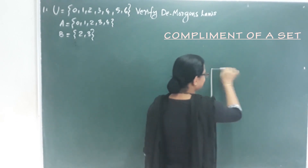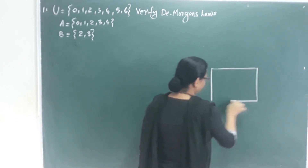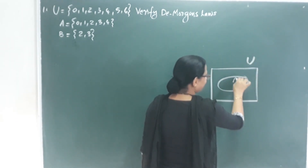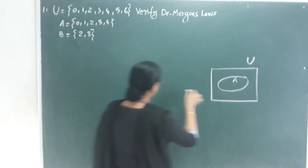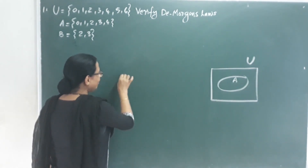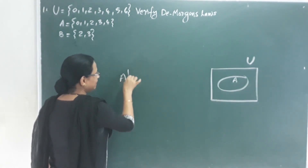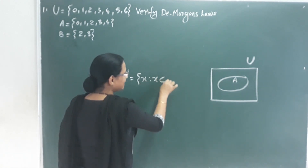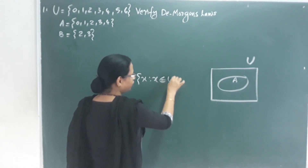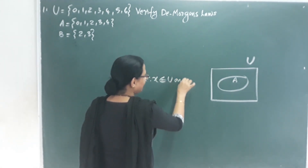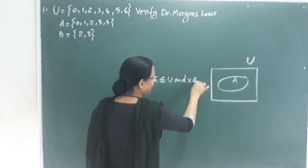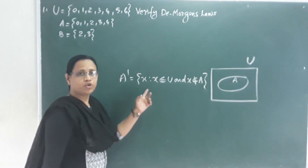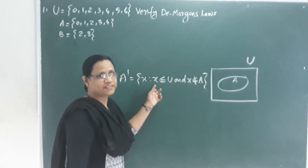A universal set is U. A is a subset of U. A complement is defined as: A' equals the set of x such that x is an element of U and x is not an element of A. It is called the complement of A set.